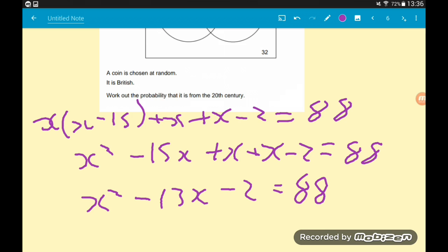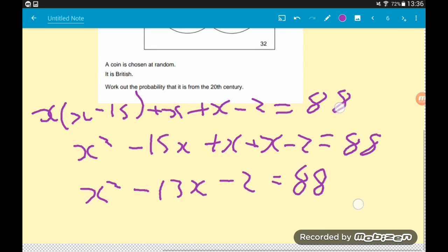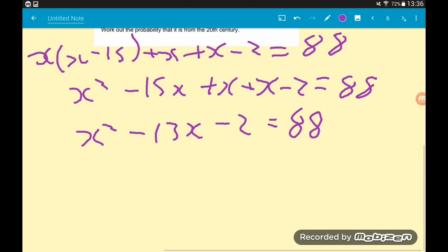All of a sudden we've now got a quadratic equation that needs solving. We know it's quadratic because we have an x squared term. To solve a quadratic we need everything on the same side and zero on the other, so we're going to take away the 88, which gives us x squared minus 13x minus 90 equals zero. So there's our quadratic equation.